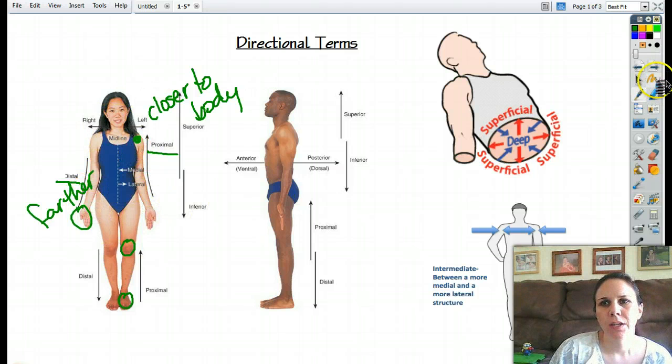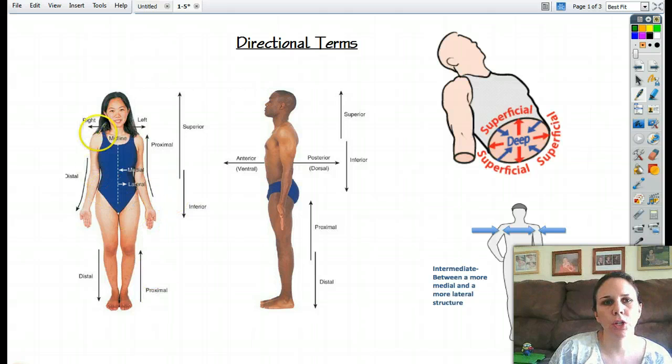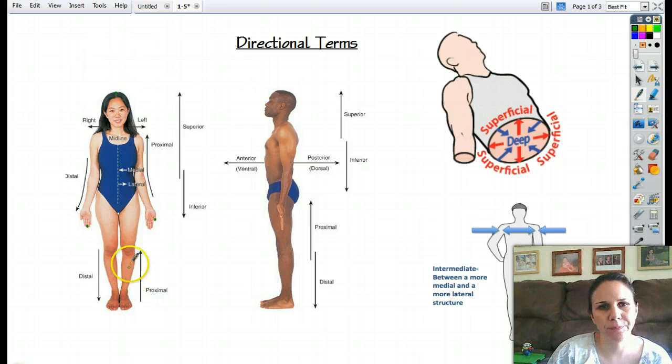because they are closer to the main portion of her body. Okay, so proximal means closer to the core, closer to the middle, and distal means farther away. So the top of her head is distal, her fingers are distal, her toes are distal.